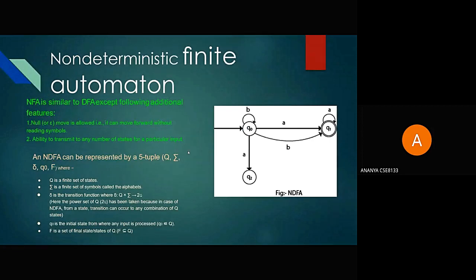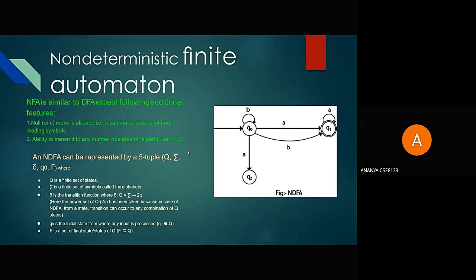Non-Deterministic Finite Automata: NFA is similar to DFA except for the following additional features. First, null move is allowed. Second, it has the ability to transition to any number of states for a particular input, meaning it contains multiple next states. NFA can also be represented by five tuples — all the same as DFA — but the transition function delta is different: it is expressed as Q × Sigma → 2^Q, where 2^Q is used to represent multiple states.